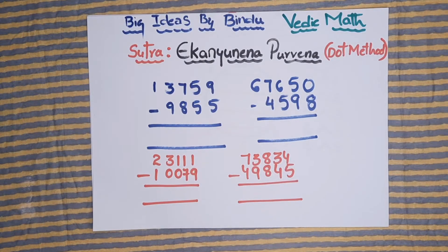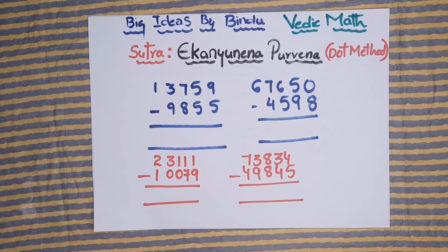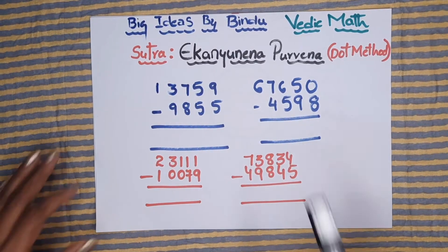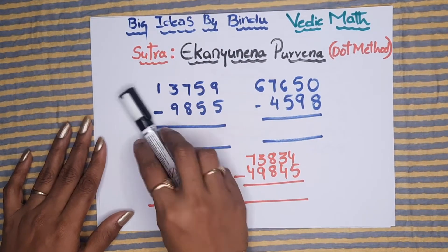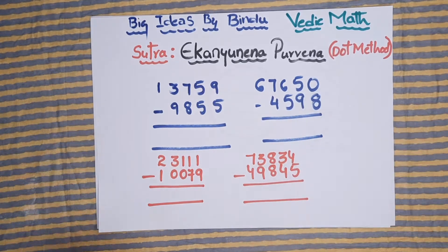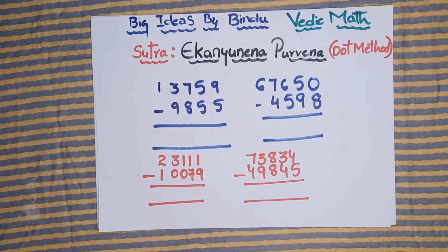Hello guys, welcome back to my channel Biggera Svabindu. I am back with one more Vedic concept. This sutra is called Ekanyunena Purvena, which means dot method subtraction.